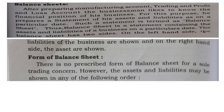After preparing the manufacturing, trading and profit and loss account, you need to understand the financial position of the business. For this purpose, a statement of assets and liabilities as on a particular date is prepared. Such a statement is termed as a balance sheet. Thus, the balance sheet is a statement containing the assets and liabilities of a business on a particular date. The liabilities of the business are shown on the left-hand side and the assets on the right-hand side. There is no prescribed form of balance sheet for a sole trading concern, but the assets and liabilities are shown in a standard order.